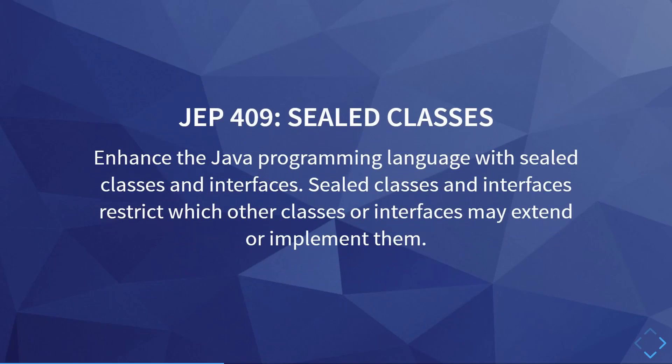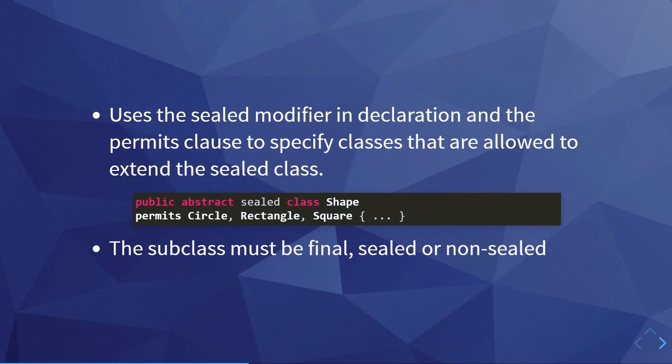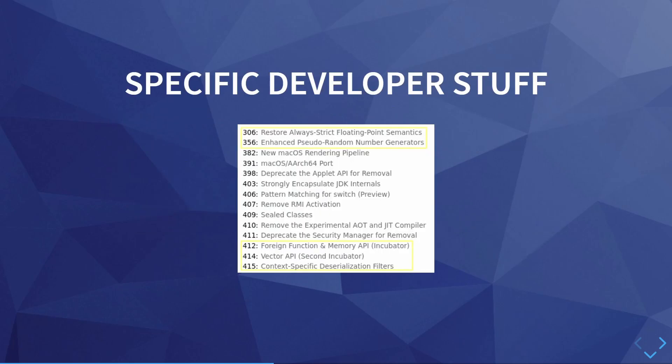Then we have JEP 409, which adds sealed classes. Sealed classes and interfaces restrict which other classes may extend or implement them. They use the sealed modifier in the declaration of the class, and then use permits to specify what classes are allowed to extend the sealed class. These subclasses must be final, sealed, or non-sealed — a new keyword used when you specifically do want to extend one of the subclasses of a sealed class.